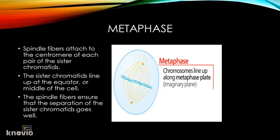Now onto the next phase: metaphase. During metaphase, spindle fibers attach to the centromere — the center of the X — of each pair of sister chromatids. Then the sister chromatids line up at the equator, or the middle of the cell. The spindle fibers ensure that the sister chromatids will separate and go to different daughter cells when the cell divides. The spindles from one side of the cell attach to one sister chromatid, and the spindles from the other side attach to the other sister chromatid.